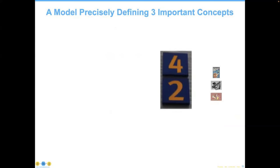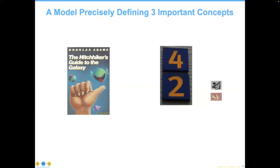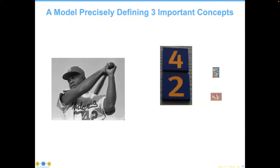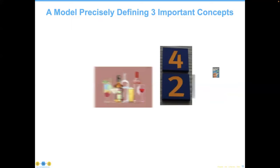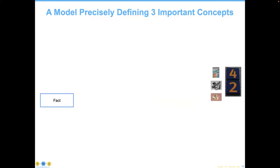Now let's talk about what we mean by data. This is one of my favorite slides. It's a model that precisely defines three very important concepts. I'll start with the fact 42. If you've read The Hitchhiker's Guide to the Galaxy, you know that 42 is the meaning of life, the universe, and everything. 42 was also Jackie Robinson's jersey number. And thirdly, 42 was my age 23 years ago, so Peter was clearly allowed to purchase adult beverages. What I've done with those three facts is associate them with three different meanings.